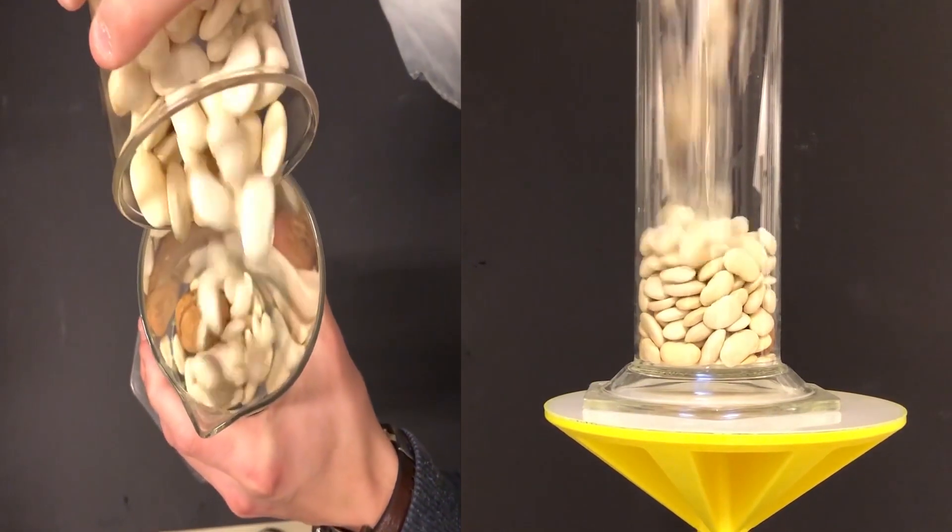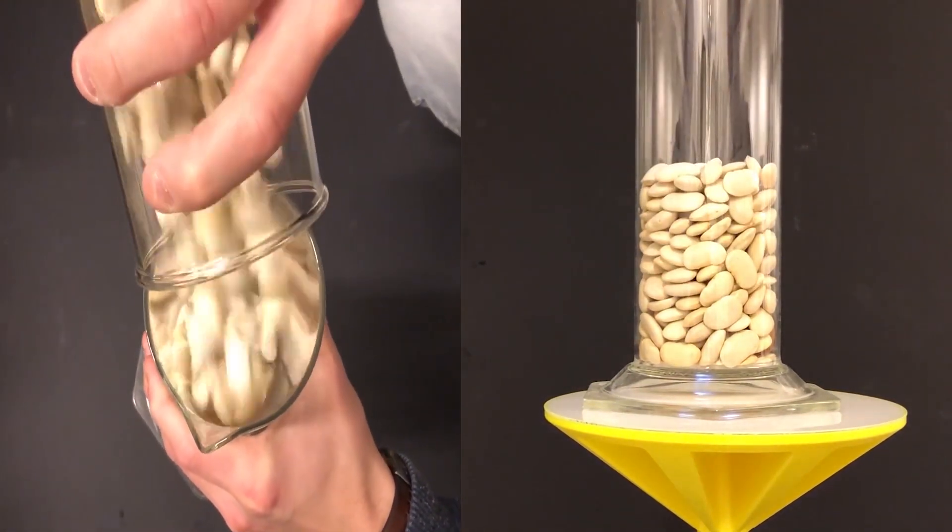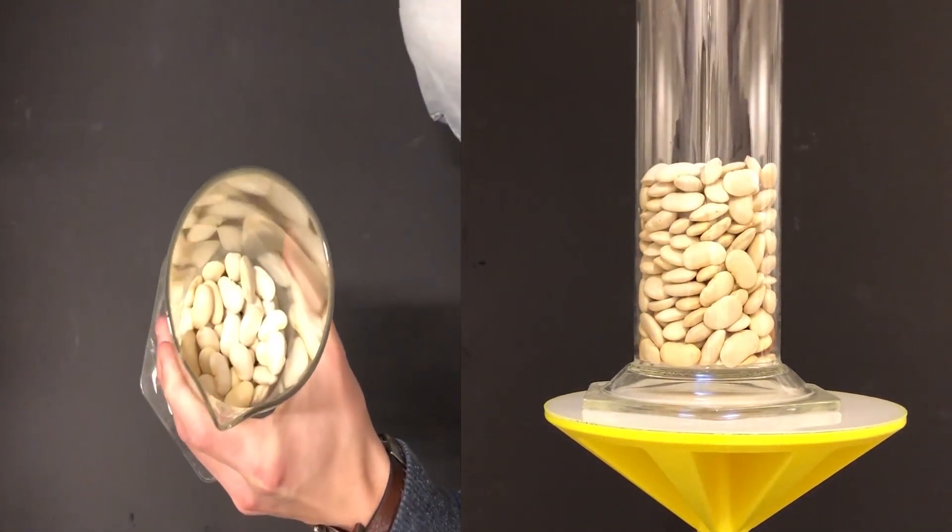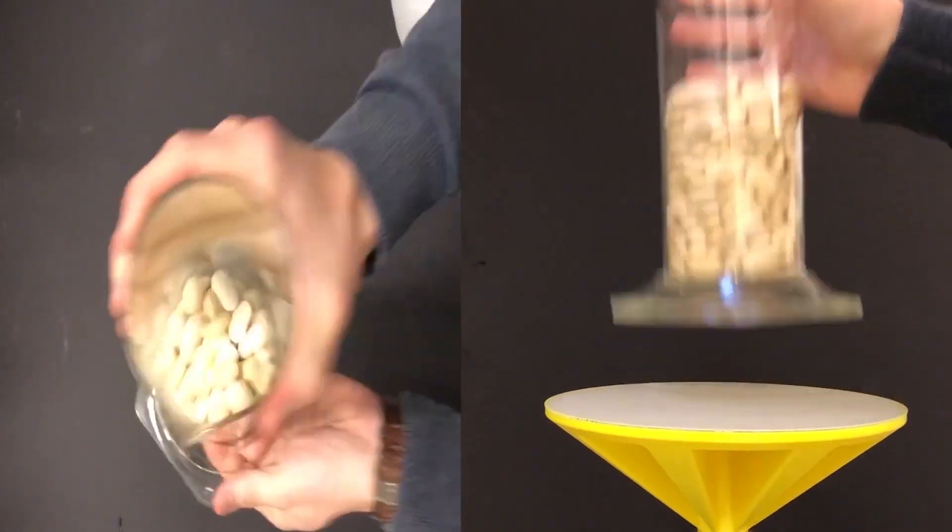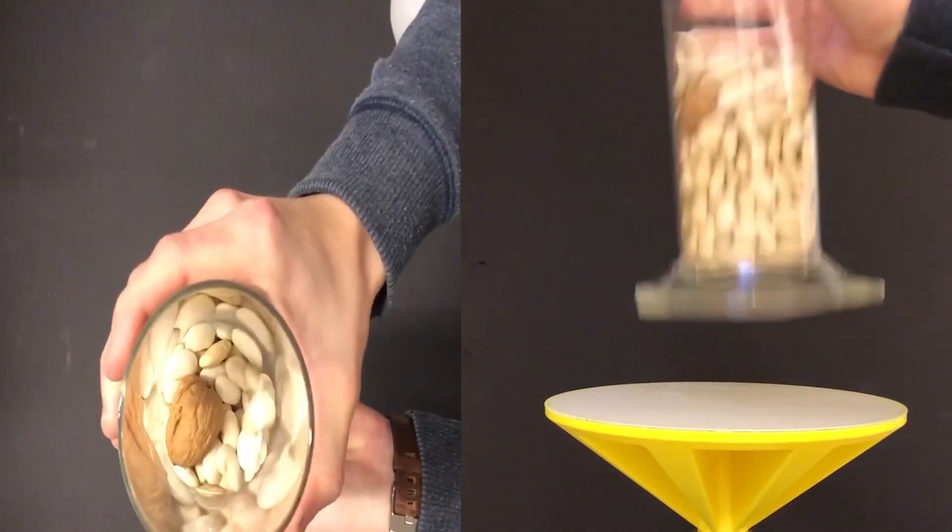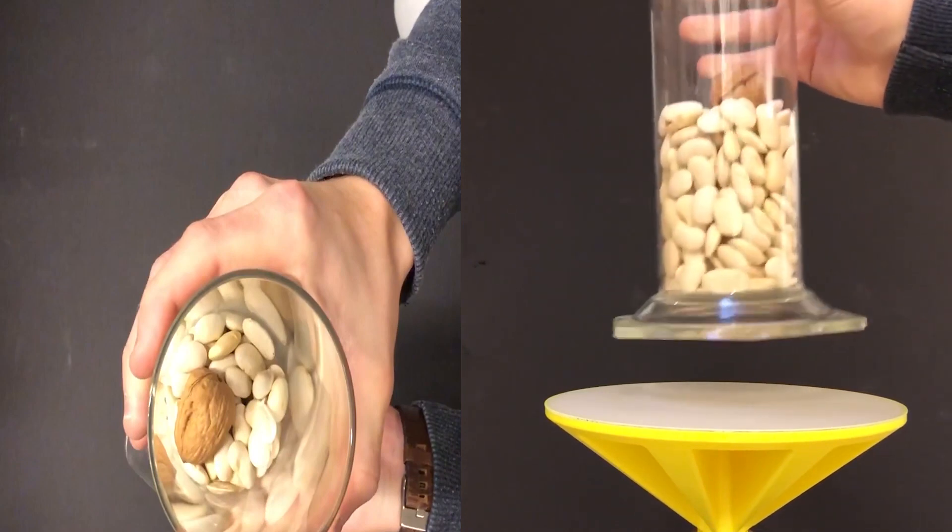In this demonstration you see the walnut at the bottom of the cylinder and is covered by butter beans. When you start to shake the cylinder you will notice that the walnut rises from the bottom of the cylinder to the top. When the walnut has reached the highest position it remains on top.